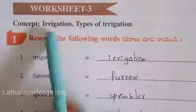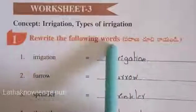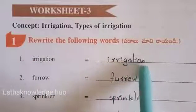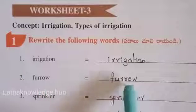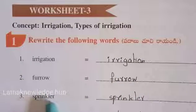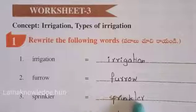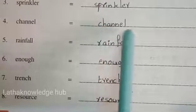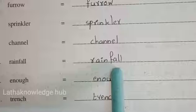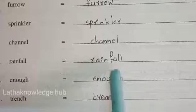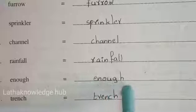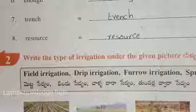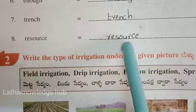Worksheet three: Irrigation - Types of Irrigation. Read the following words: Irrigation - I-R-R-I-G-A-T-I-O-N, irrigation. Furrow - F-U-R-R-O-W, furrow. Sprinkler - S-P-R-I-N-K-L-E-R, sprinkler. Channel - C-H-A-N-N-E-L, channel. Rainfall - R-A-I-N-F-A-L-L, rainfall. Enough - E-N-O-U-G-H, enough. Trench - T-R-E-N-C-H, trench. Resource - R-E-S-O-U-R-C-E, resource.